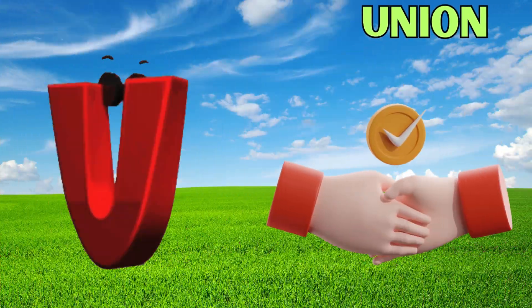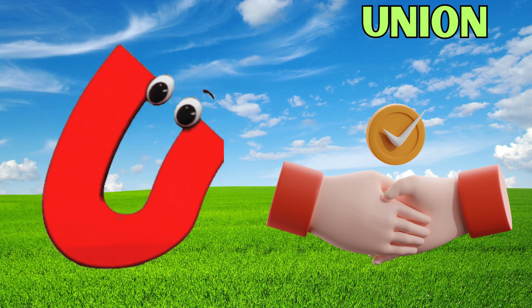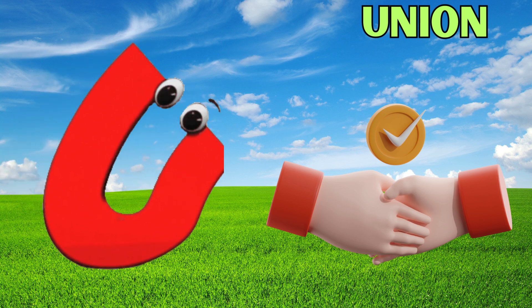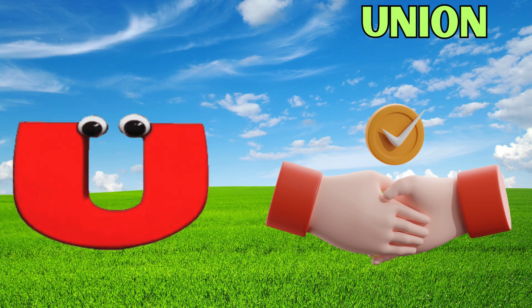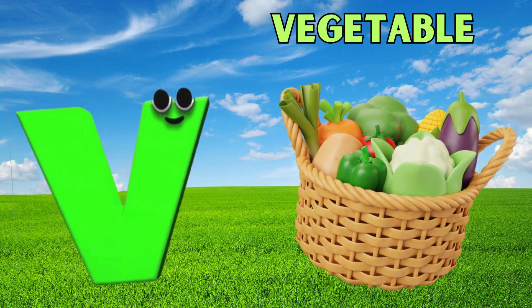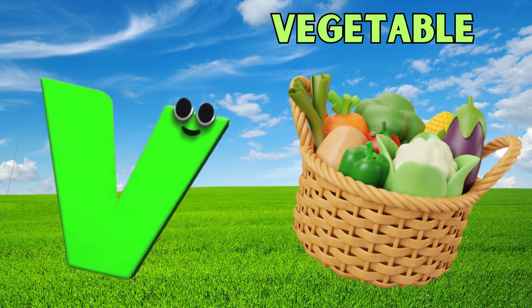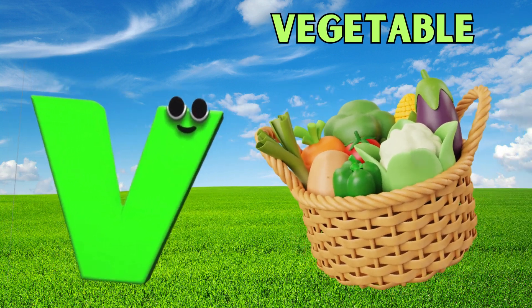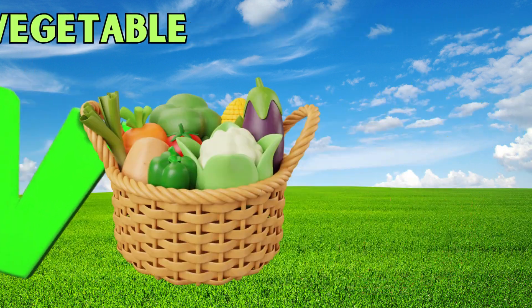U is for union, a, a, union. V is for vegetable, v, v, vegetable.